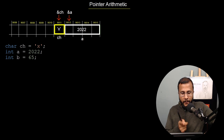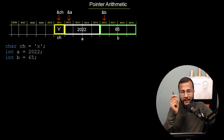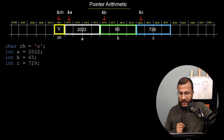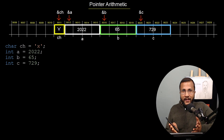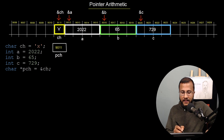Similarly I create one integer variable b which is again occupying 4 bytes. I am assuming that integer takes 4 bytes, and these 4 bytes are 9016, 9017, 9018 and 9019. Inside this, the value 65 is stored and the starting address is 9016. Similarly I create one more integer variable c inside which the value 729 is stored, and c is having 4 bytes in memory starting from address 9020 up to 9023. Now I would like to store the address of character ch in a pointer variable, so I create char* pch. In this I store the address of ch using ampersand ch. Address of ch is 9011, so 9011 is stored in pch.